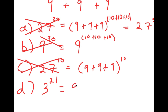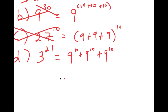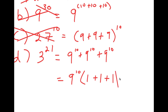We start with 9 to the power of 10 plus 9 to the power of 10 plus 9 to the power of 10, and I'm going to factor out 9 to the power of 10. So I get 9 to the power of 10 times 1 plus 1 plus 1, which is equal to 9 to the power of 10 times 3.